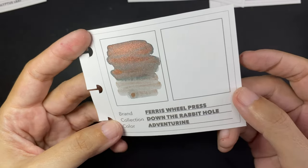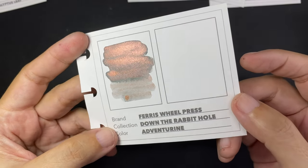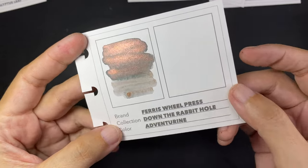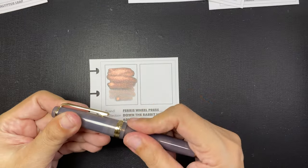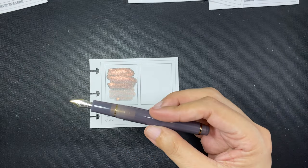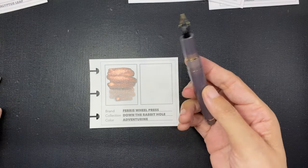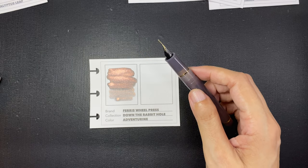And finally, this is Adventurine. The ink is a light gray, but the shimmer looks like a copper or a rose gold. I cannot really tell. But in the Ferris Wheel Press website, they say that this is rose gold. This ink is super, super pretty.